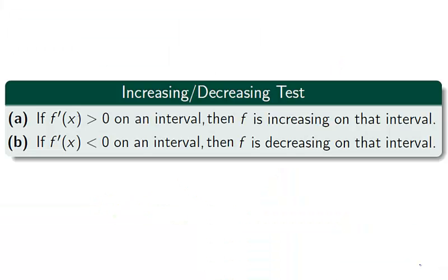We can use the first derivative to tell us if an interval is increasing or decreasing. If every point on an interval has a positive derivative, then the function is increasing on that interval. In the same way, if every point of an interval has a negative derivative, the function is decreasing on that interval. Take note of the wording of this test — it assumes that the function is differentiable on the interval. If a derivative does not exist, it can be neither positive nor negative.